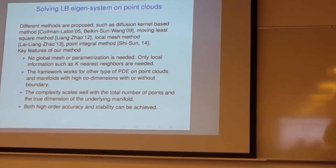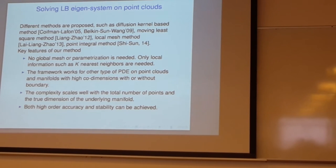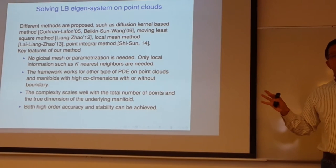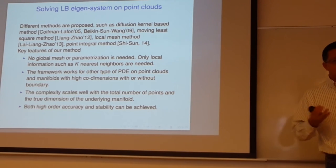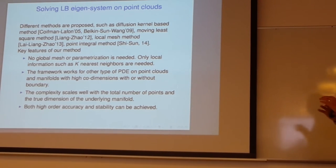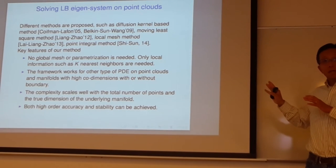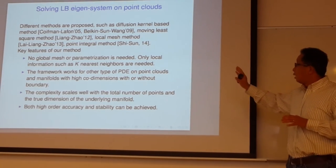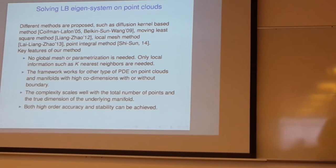The good thing about that approach is their linear system is always what I call monotone — it's diagonal-dominant: the diagonal is one sign, all off-diagonal is the opposite sign, and the sum equals zero. But a monotone scheme can achieve at most first order accuracy. Their convergence order of accuracy is quite low.